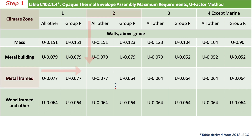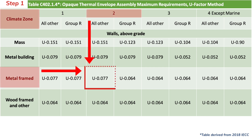For this steel frame building, for example, go to table C402.1.4 in the 2018 IECC, which shows that an assembly U-factor of 0.077 or less is required for this building type in climate zone 2a.